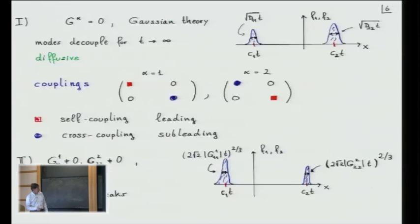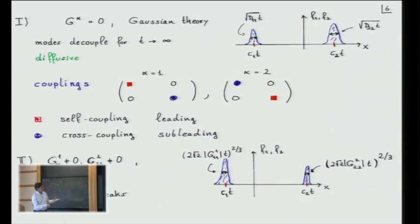Let's look at what can happen. If all couplings are zero — G_alpha equal to zero — you have simply a Gaussian theory. When you look at very long times, you have two peaks which are moving with distinct velocities. As they move, they decouple. The variance is given by the diagonal element of the diffusion matrix. The modes decouple as t goes to infinity and they are diffusive.